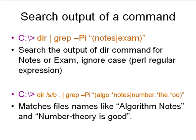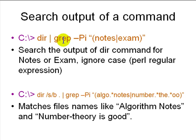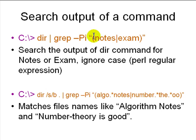For example, to search for files named 'notes' or 'exam': type 'DIR' and pipe its output to 'grep -pi "notes|exam"'. The pipe sends the output of DIR directly to grep instead of saving it first. Any file or folder that has 'notes' or 'exam' in the name will be printed, regardless of case.